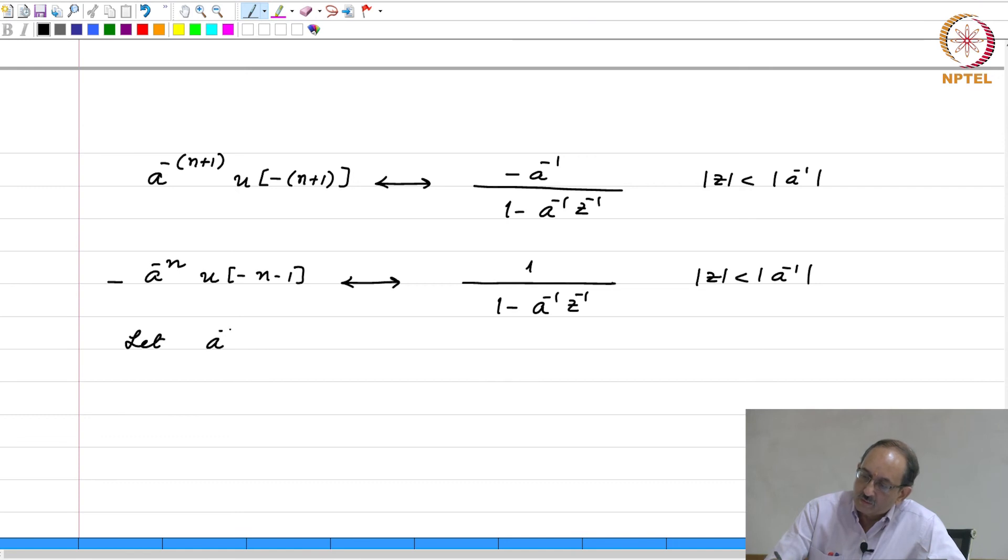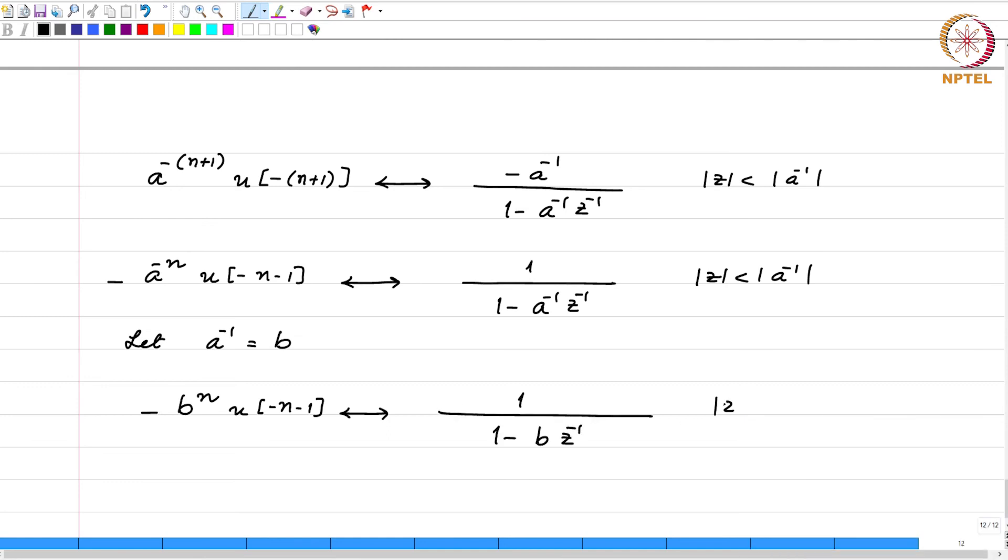Now, let a inverse equal to b. Therefore, this becomes minus b to the n u of minus n minus 1. And, this is nothing but 1 by 1 minus b z inverse with mod z less than mod b. So, again we have used properties to derive the transform of one starting from the transform of the other.